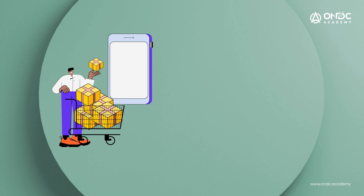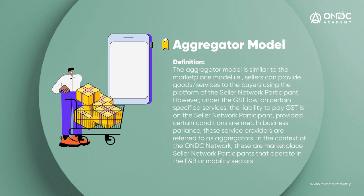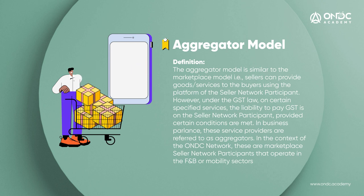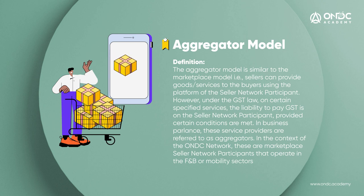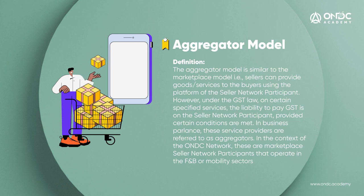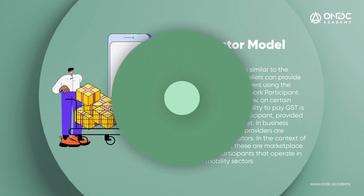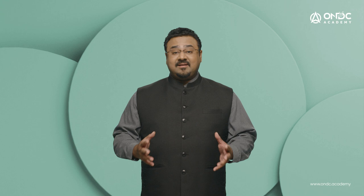The third model is the aggregator model, similar to the marketplace model where sellers can provide goods or services to buyers using the seller network participant's platform. However, for certain specified services, the seller network participant is liable to pay GST under certain conditions. These service providers are known as aggregators, and in the context of the ONDC network they are marketplace seller network participants operating in the F&B or mobility sectors.